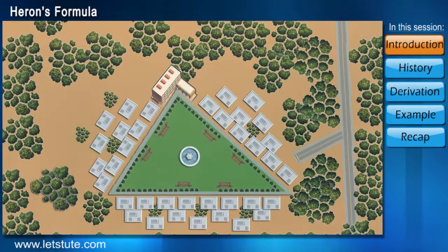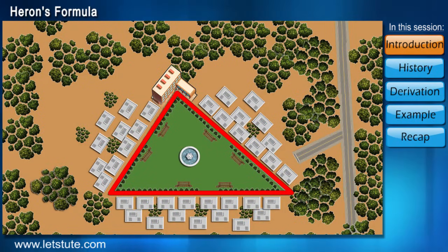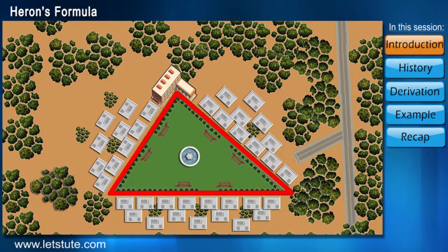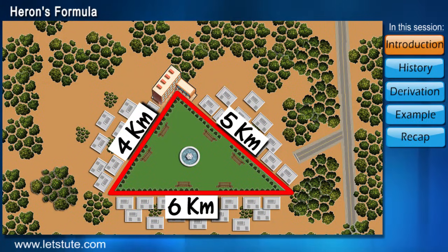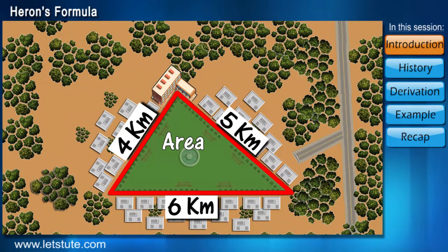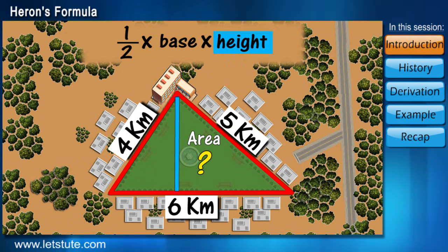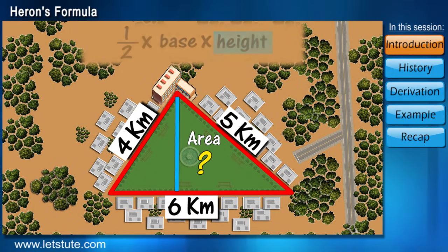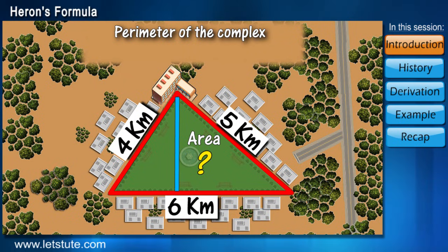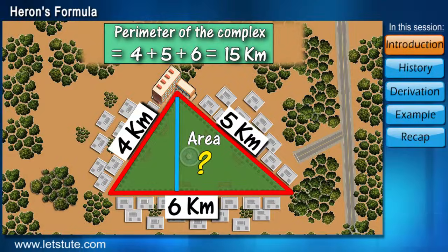Now suppose if you have a huge triangular complex and we only know the length of each side of the complex. Let's say 4 kilometers, 5 kilometers, and 6 kilometers. Now, if I ask you to calculate the area of this complex, can you calculate it using the given formula? If we want to use this formula, we need the height of the triangular complex which we do not have. But with the given information, we can calculate the perimeter of the complex which is nothing but the addition of all the sides. Why are we doing this? You will come to know in the later part of the session.